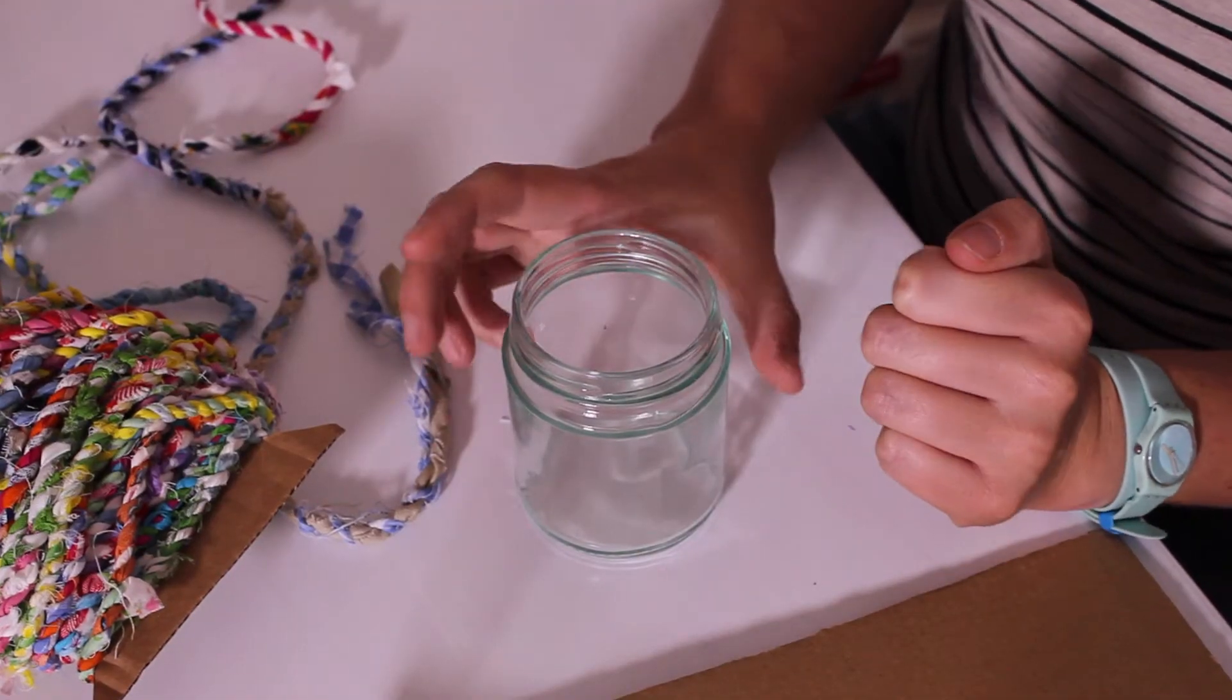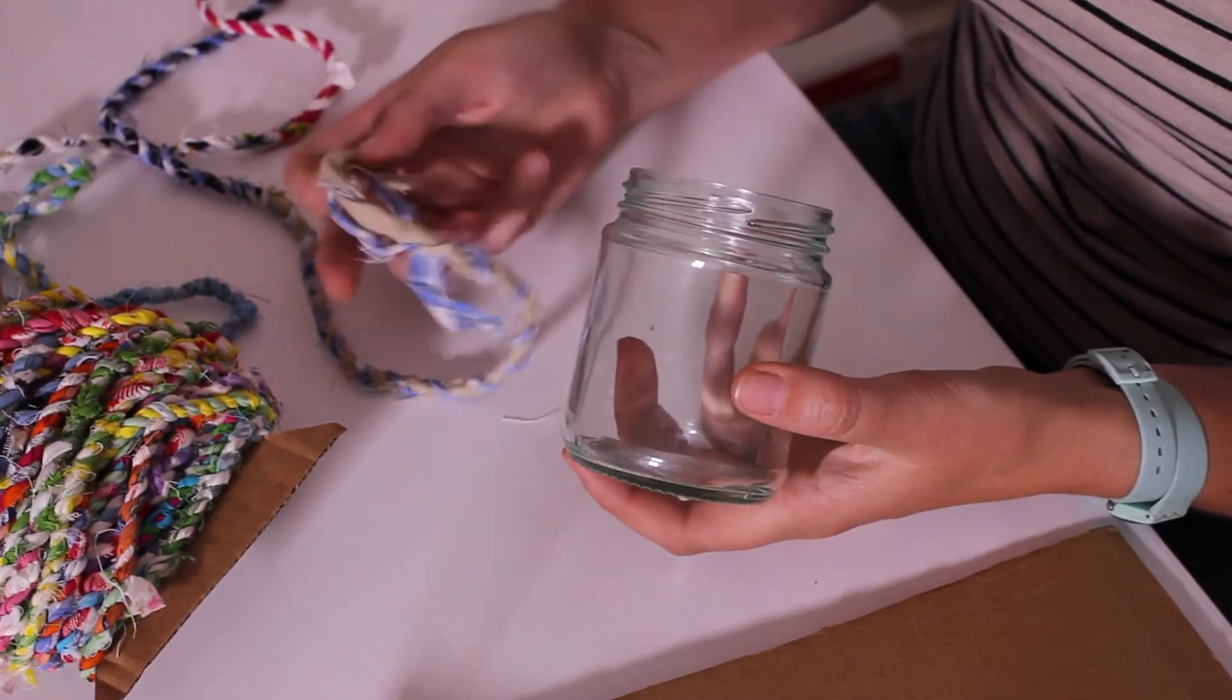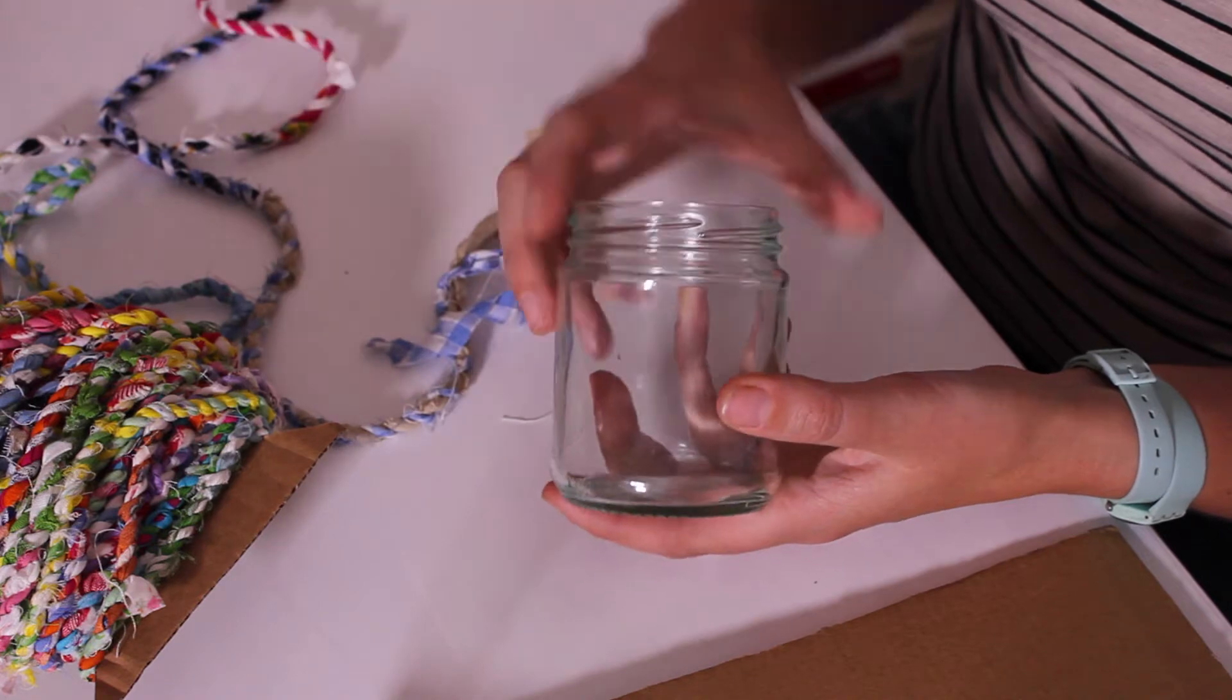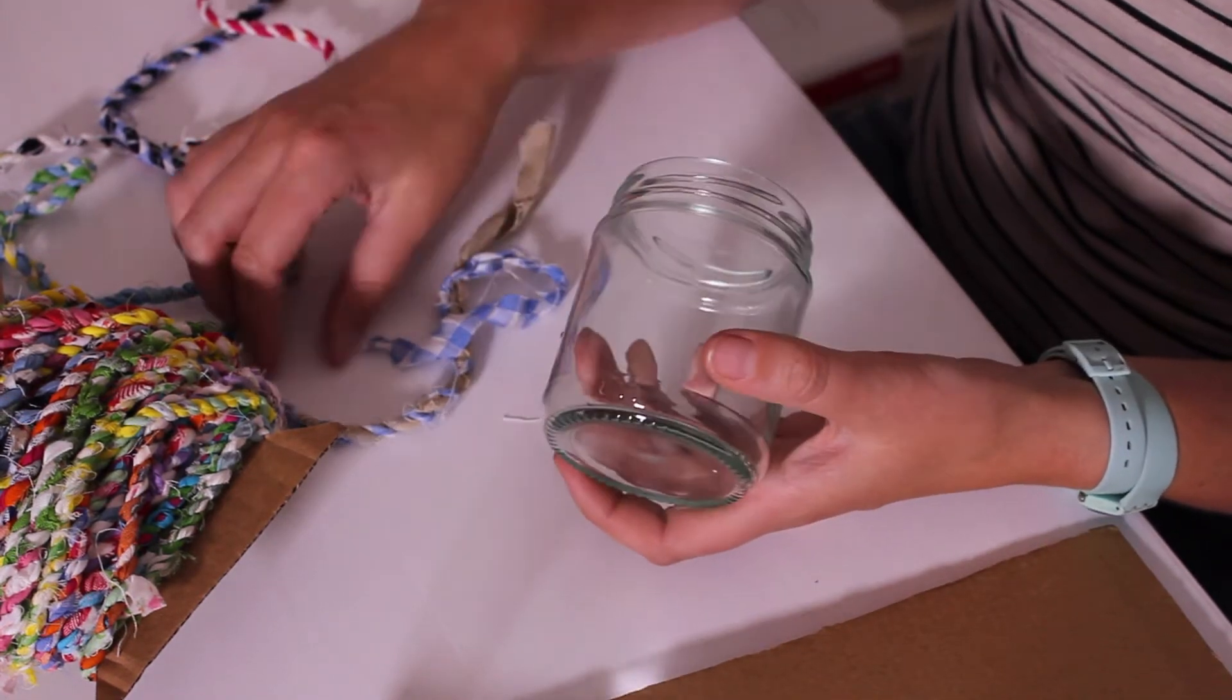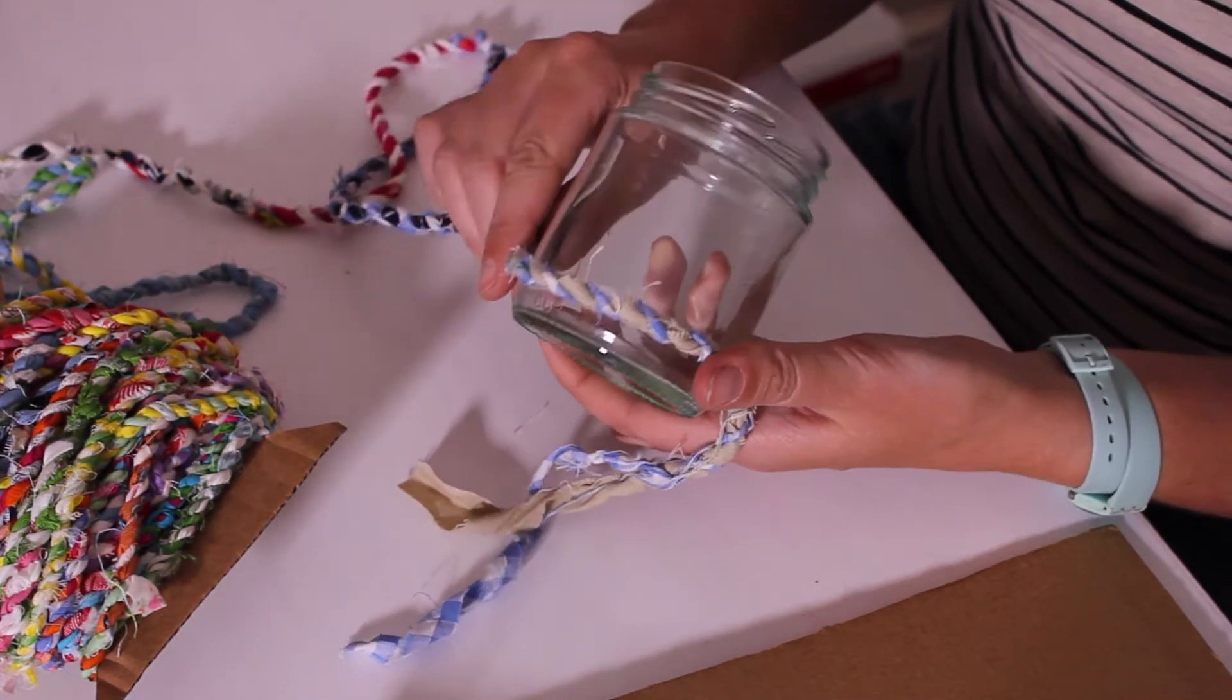This craft is super simple. You just need an empty jar, the yarn we made in the tutorial last month, and a glue gun. What we're going to do is stick the yarn to the jar with the glue.